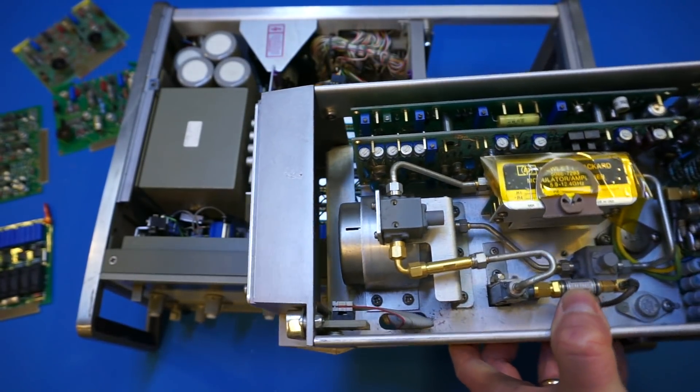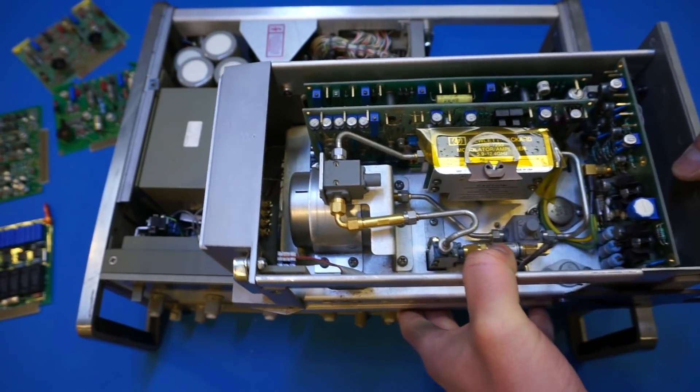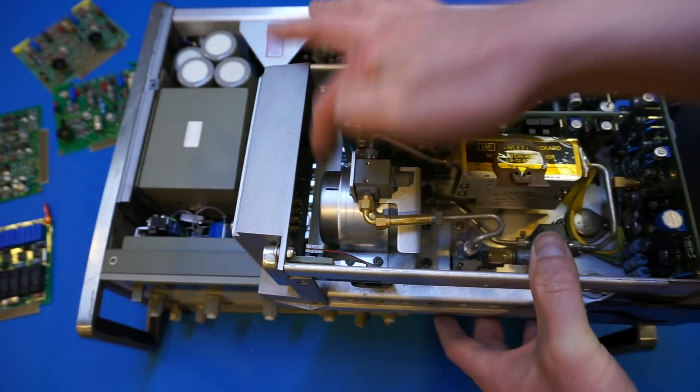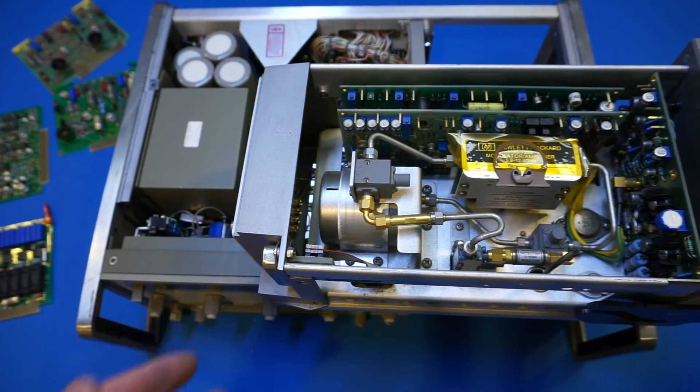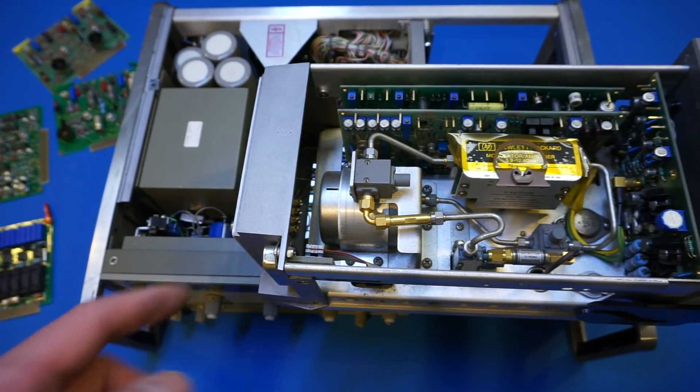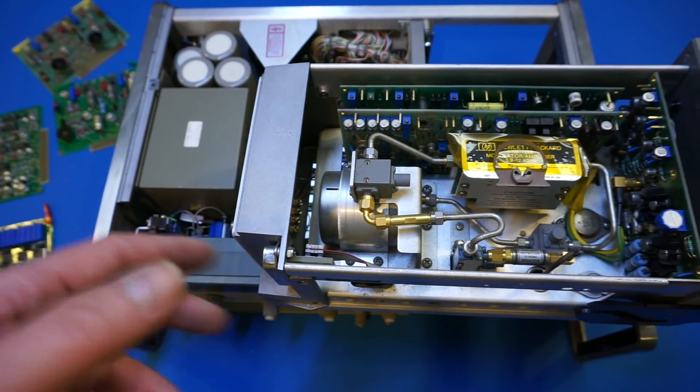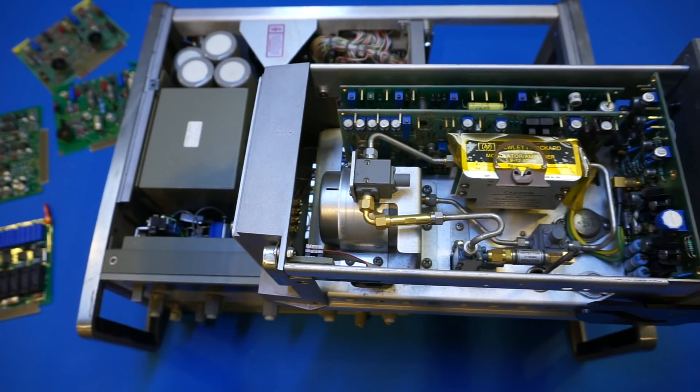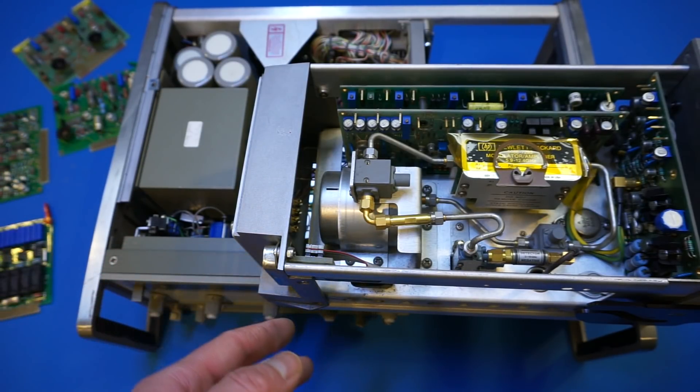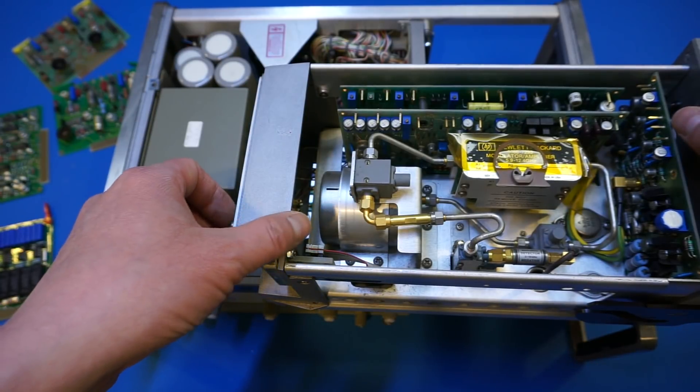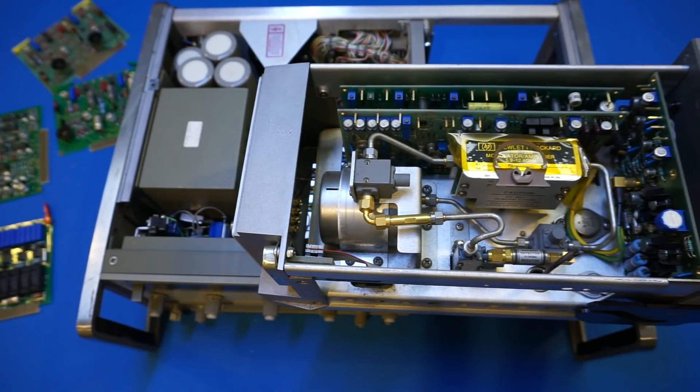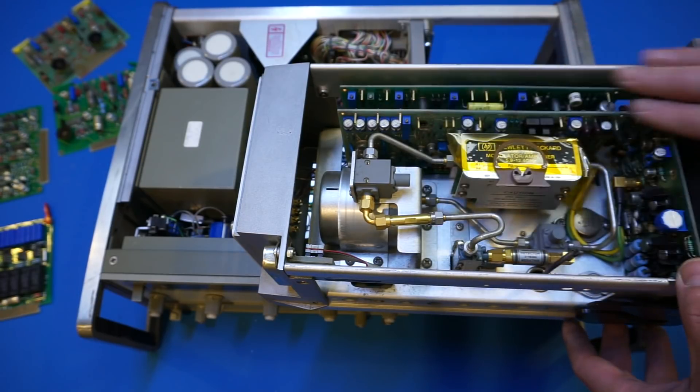And so how the YIG oscillator works basically is it's a YIG-tuned filter essentially. And you have the RF signal coming in, and depends on the tuning voltage, you have the yttrium iron garnet resonate at a different frequency. And we have a teardown of that in my WaveTech 907 teardown article that I have on my website. You can take a look if you are interested.